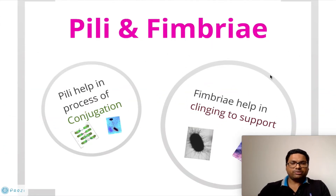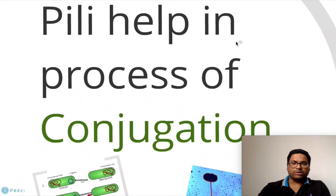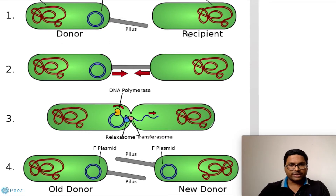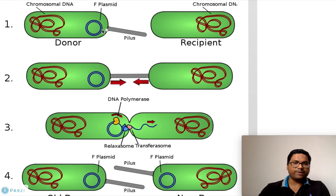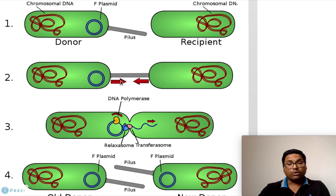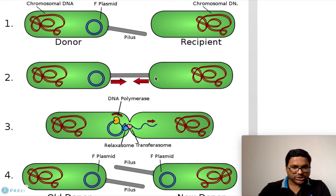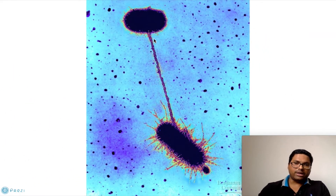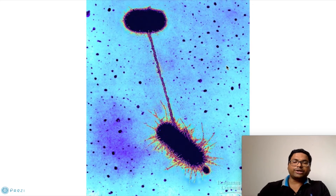The next appendages are called pili and fimbriae. Pili help in the process of conjugation in bacteria. In this process, the donor cell transfers the fertility plasmid (F plasmid) to the recipient cell. Conjugation involves the pili of the donor bacteria connecting to the recipient cell, and through this pilus the copy of the plasmid is transferred, making the recipient cell fertile. You can see the actual photograph where the pilus connects the two bacteria during conjugation.